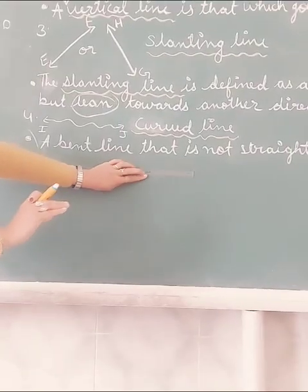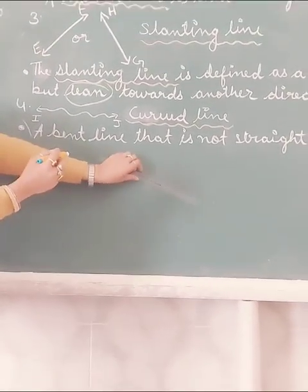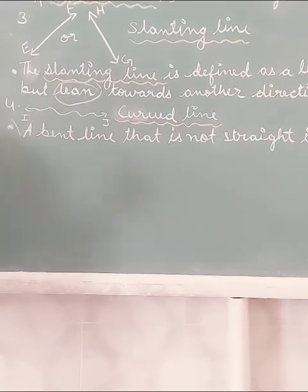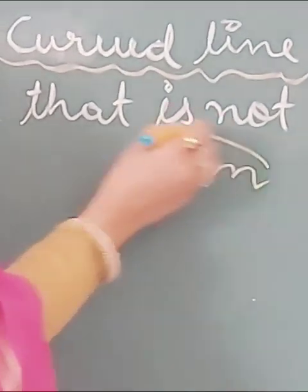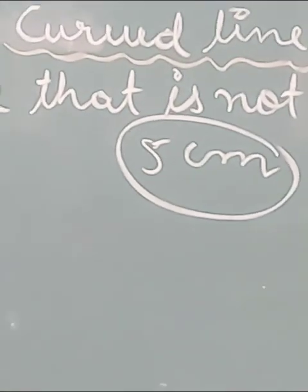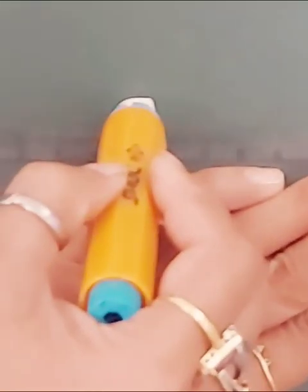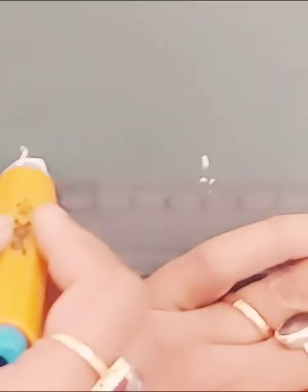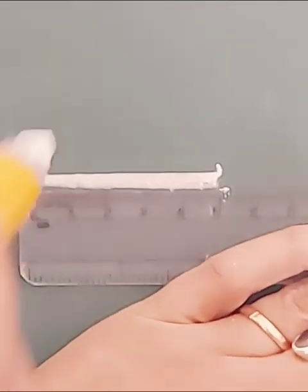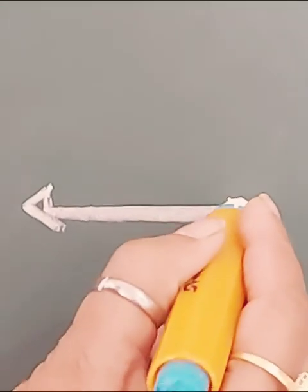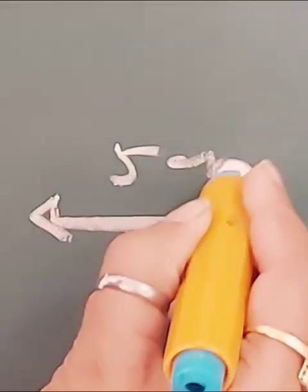I have a ruler in my hand. If the question is to draw a line of 5 cm, you will start from 0 on the ruler — this is the 0. From 0 to 5, you draw your straight line like this. This line is 5 cm.